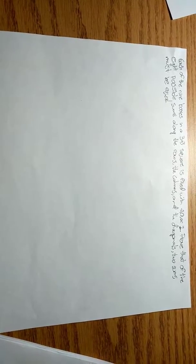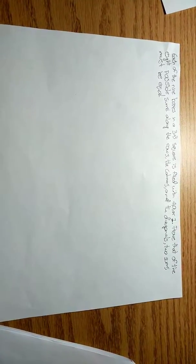Prove that of the eight possible sums along the rows, the columns, and the diagonals, two sums must be equal.